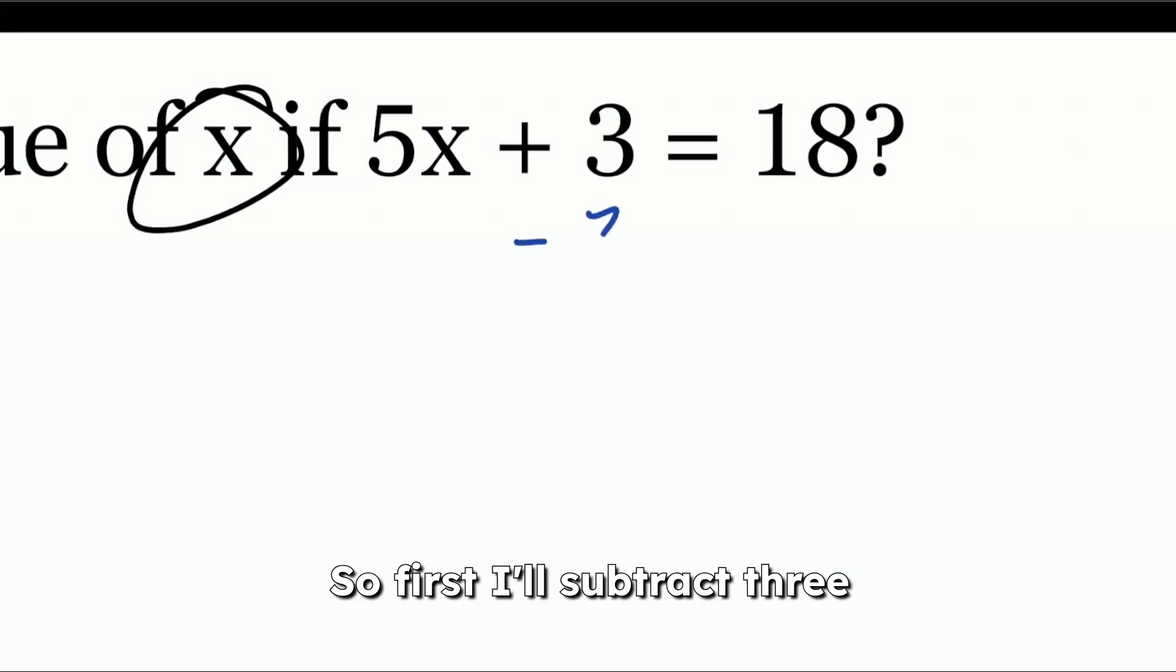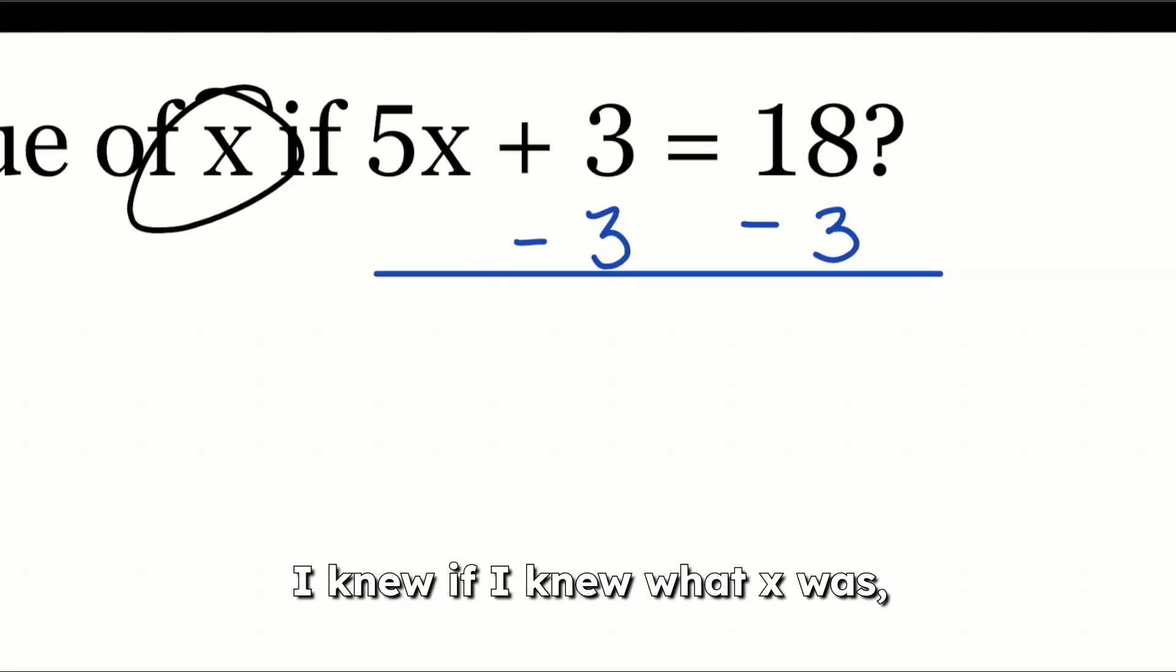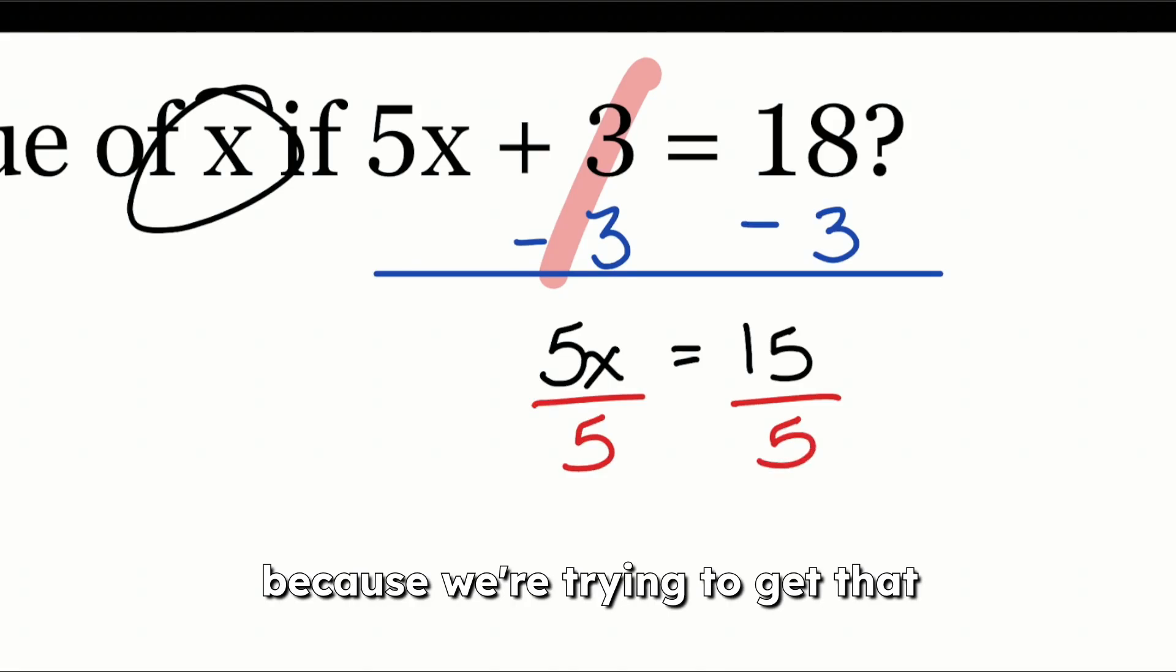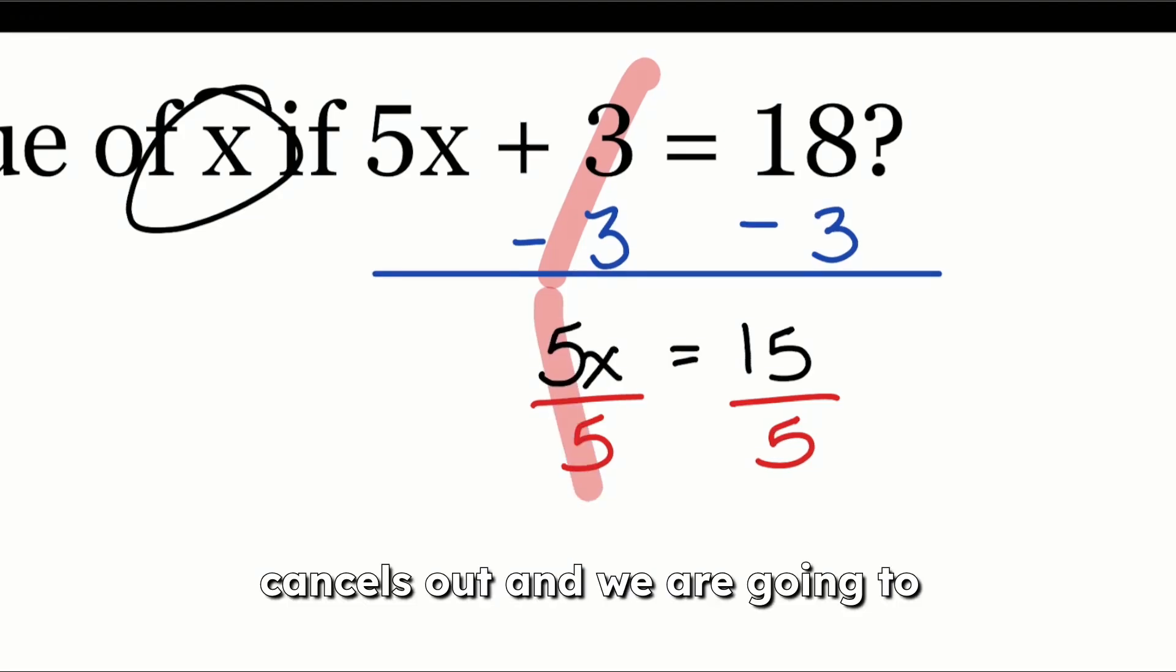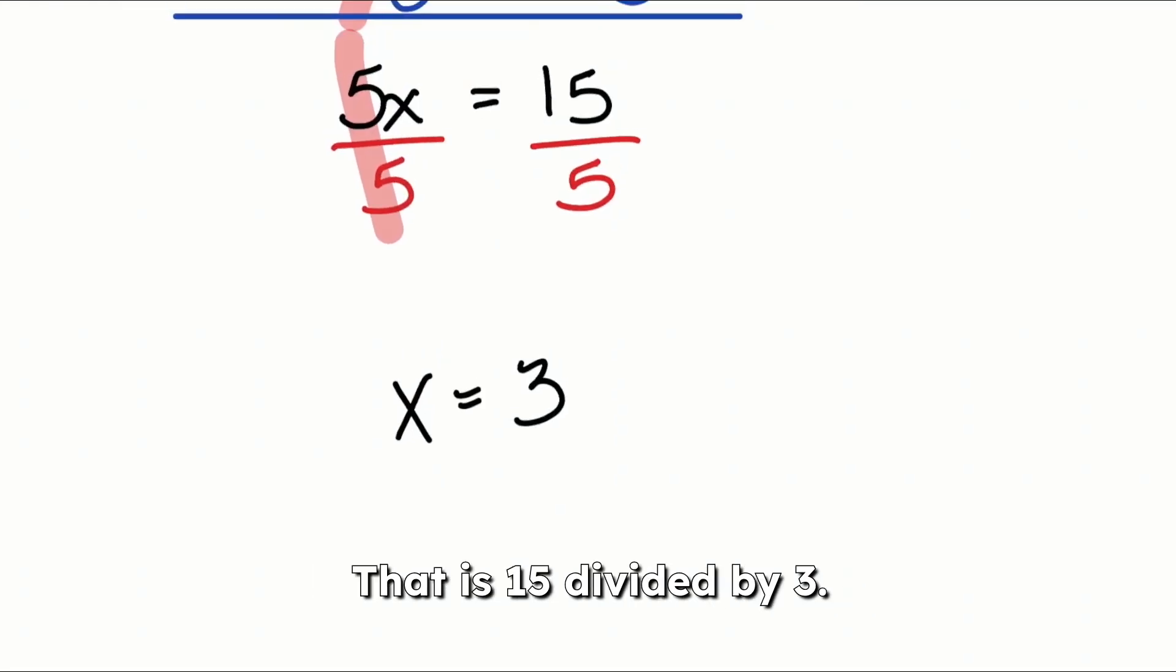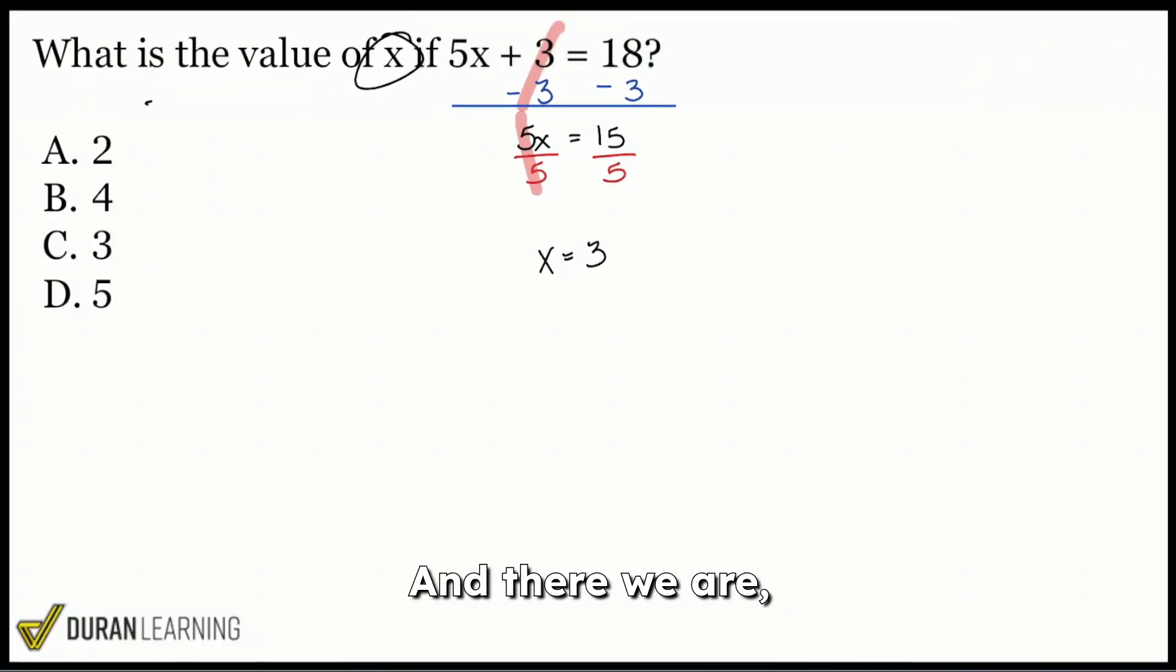So first, I'll subtract 3 from both sides. Because remember, we're trying to work backwards from the order of operations. I knew, if I knew what X was, I'd multiply by 5, then add the 3. So working backwards, the first step I'll take is subtracting 3 to cancel that out. Because now I just have 5X left over, and that's going to equal 15. The last step that I'll take is divide both sides by 5, because we're trying to get that X right here by itself. So boom, cancels out. And we are going to have X equals 3. That is 15 divided by 5. And there we are, my math party people. All set.